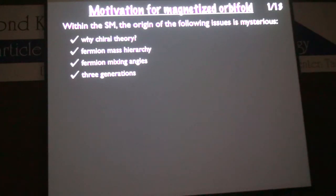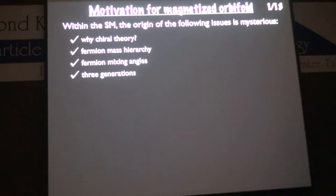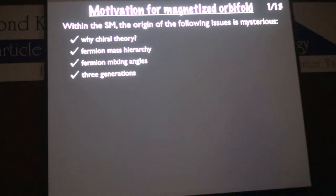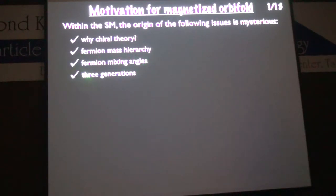When we consider the standard model, it is a very nice theory and explains lots of experimental results. But from a theoretical point of view, several mysteries remain. We cannot explain why this theory is a chiral theory. Also, there is a large fermion mass hierarchy in the Yukawa couplings that we cannot explain — it is just an input parameter. The origin of mixing angles and why there are three generations are also still mysterious.